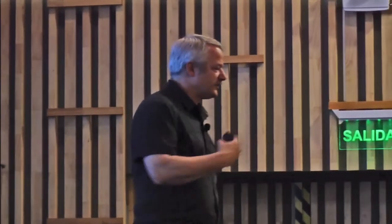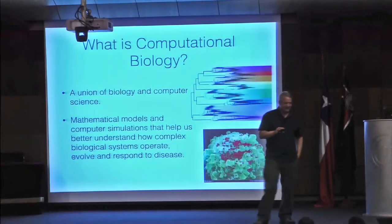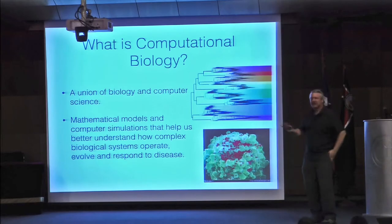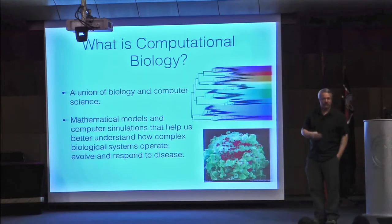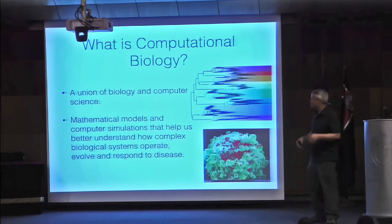When I talk to people about Computational Biology, they're never quite sure what I'm talking about, and even amongst the folks I've hired, we're never quite sure what we're talking about. Our great debate is the difference between bioinformatics and Computational Biology, and we haven't figured that out yet either. But basically, it's the union of biology and computer science — computer programming in particular — incorporating mathematical modeling and computer simulations to understand complex biological systems.